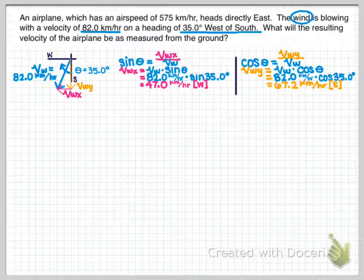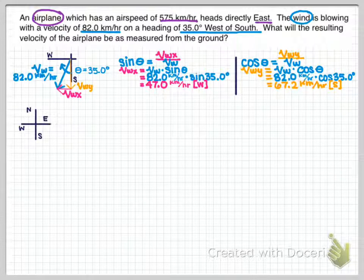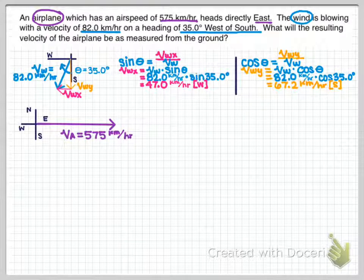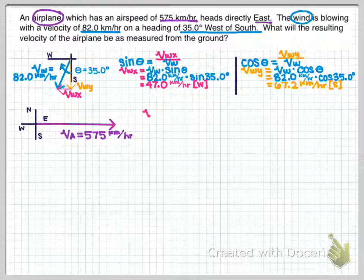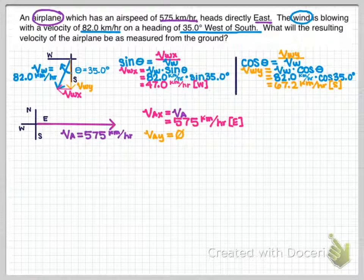Now I'll take the airplane's velocity of 575 kilometers an hour heading directly east and draw that vector to the east. I don't need to break this into components because it already is a horizontal component. So VAX equals 575 kilometers an hour east, and VAY is zero.